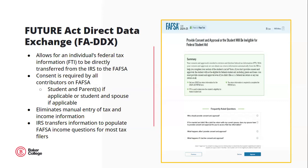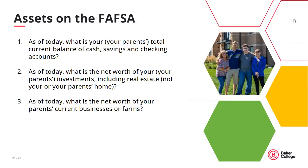Another change to the 24-25 FAFSA is the addition of the Future Act Direct Data Exchange Tool, known as FADDX. The Future Act was passed which calls for the FAFSA to be simplified, allowing direct transfer of an individual's tax data on file with the IRS directly to the FAFSA application. This eliminates the need for manual entry of tax and income information and makes the application process much quicker and easier. Because this is a lot of income information coming over between systems, students and contributors will have to provide their consent to the FAFSA individually.